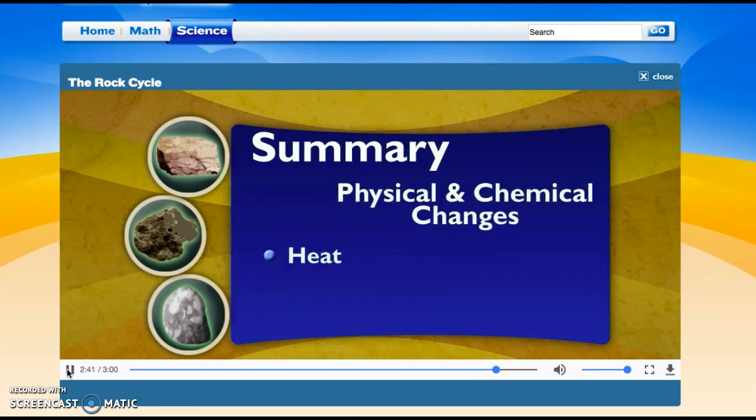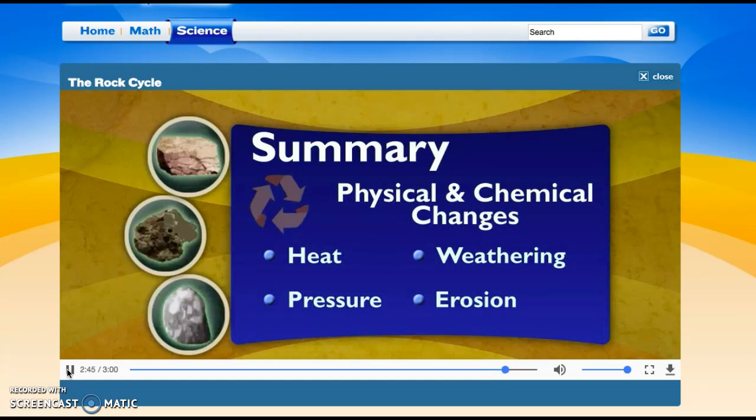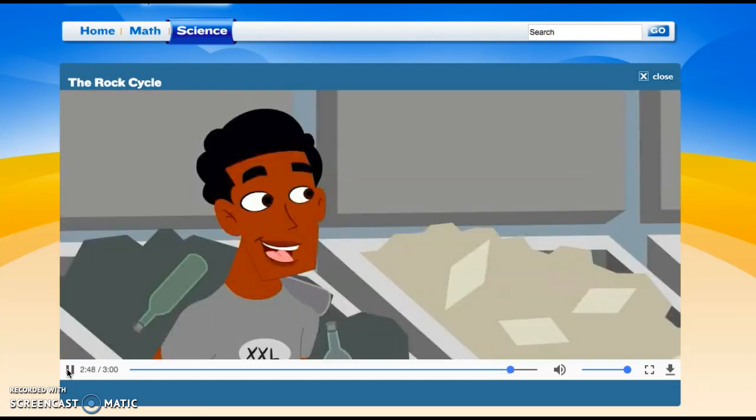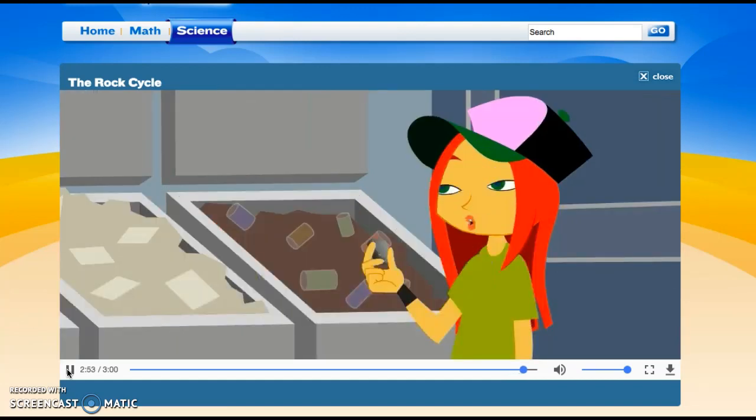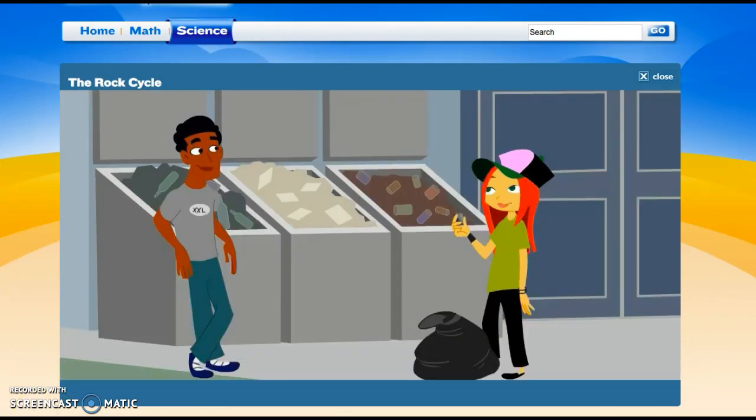Physical and chemical changes like heat, pressure, weathering, and erosion all help change rocks from one type to another. Hot stuff, huh? Totally. Recycling is sort of like this never-ending rock cycle. Pretty cool how we can turn one thing into another, just like Mother Nature herself. We're more powerful than we think sometimes.